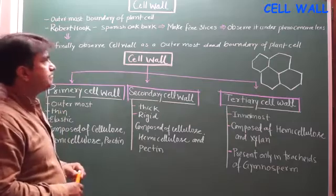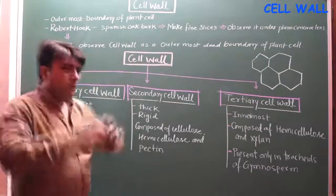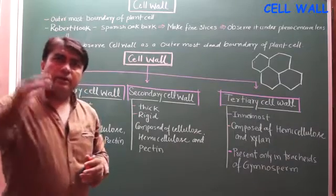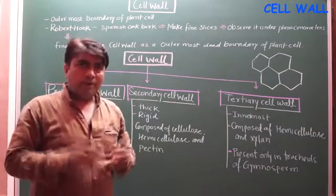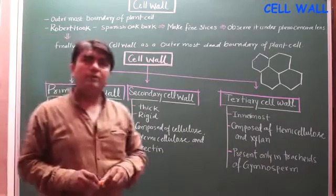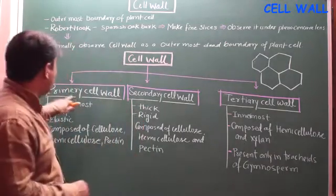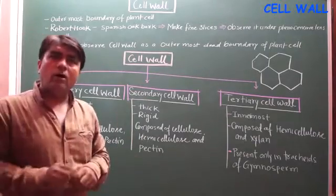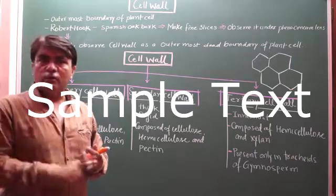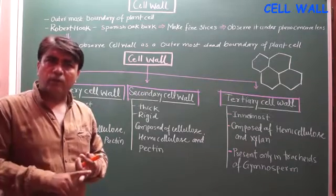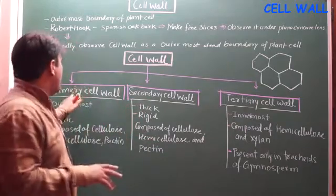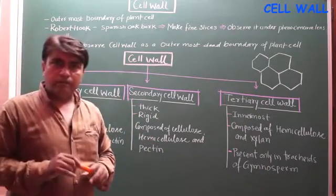The cell wall has three types: primary, secondary, and tertiary. The primary cell wall is the universal cell wall because it is present in all plants — in gymnosperms, angiosperms, bryophytes, pteridophytes — in every plant cell, the primary cell wall is present.